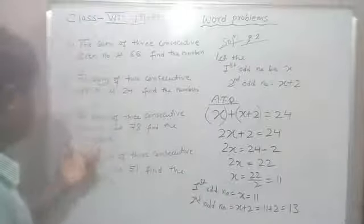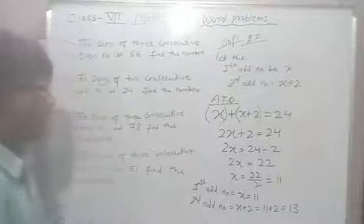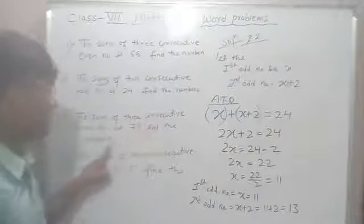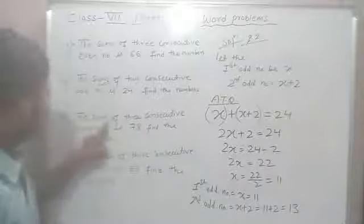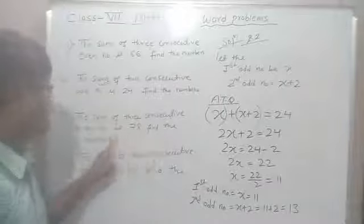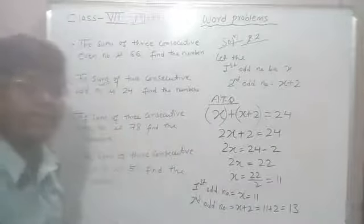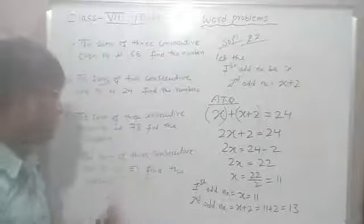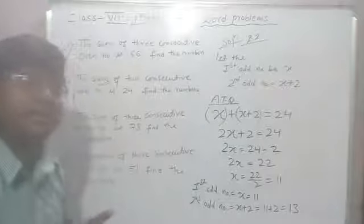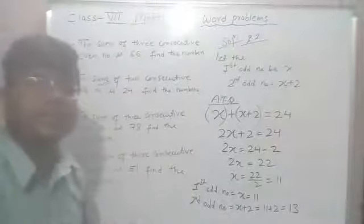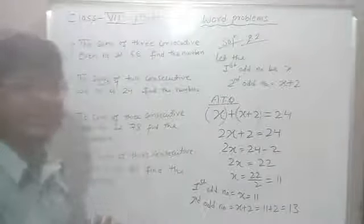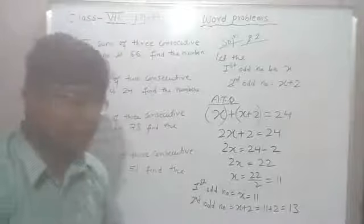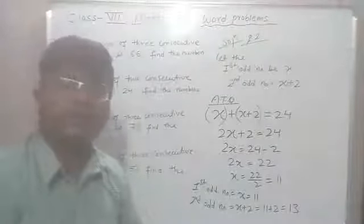Based on these examples, there are two more questions for you to try yourself. Question 3: the sum of three consecutive even numbers is 78 — find the numbers. Question 4: the sum of three consecutive odd numbers is 51 — find the numbers. These are similar to what we just solved. Please try them. Thank you for today's class — stay home, stay safe.